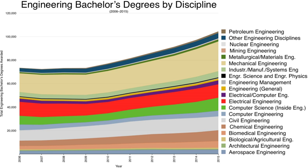The FE exam is held at remote testing locations four times throughout the year and can be taken by college graduates as well as current college students. After successfully passing the Fundamentals of Engineering exam and receiving an ABET-accredited engineering degree, an aspiring engineer may apply for engineer-in-training status with the state's licensing board. If granted, they may use the suffix EIT to denote their status as an engineer-in-training.